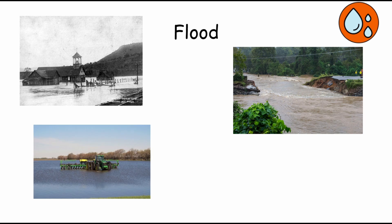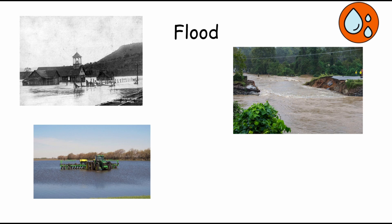Floods can occur suddenly, such as in the case of flash floods, or develop more gradually as river levels rise over time. Mitigation measures such as flood control infrastructure, early warning systems, and land use planning are essential for managing the risks of flooding.